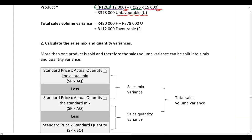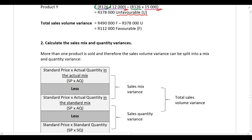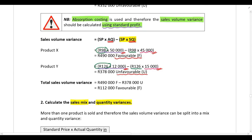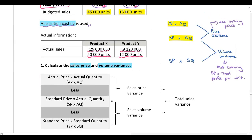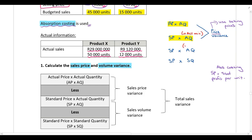In part two we now calculate the sales mix and quantity variances. Because the company sells two products — Product X and Product Y — the total sales volume variance can be split into a mix and quantity variance. Go back to your framework: you just repeat the calculation of standard price times actual quantity; the only difference is one uses the actual mix and the other uses the standard mix.